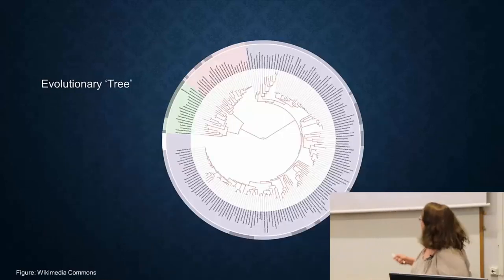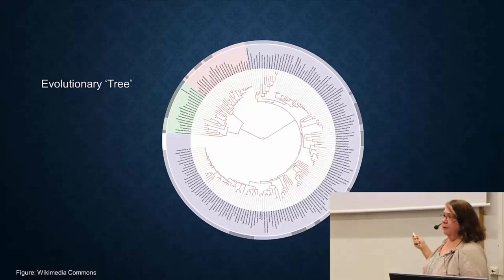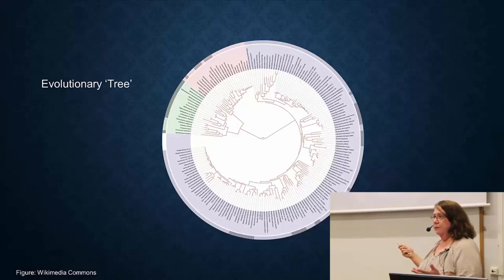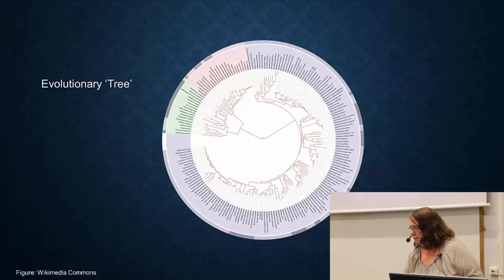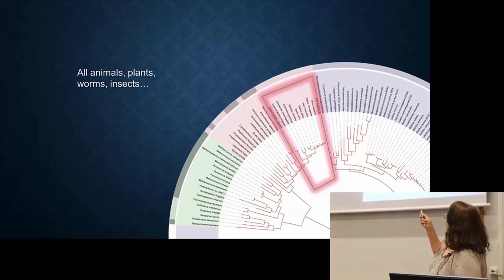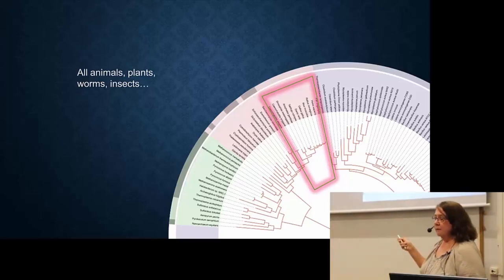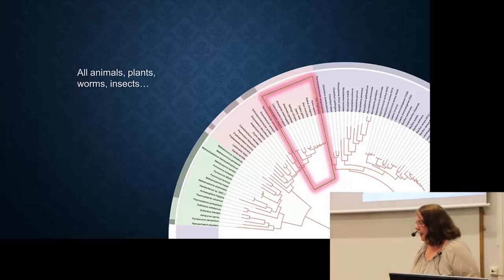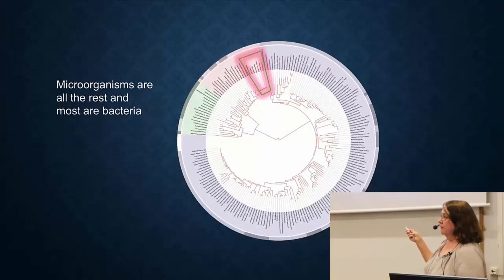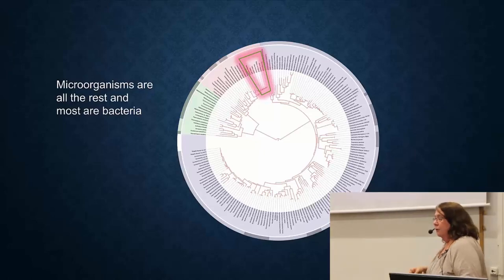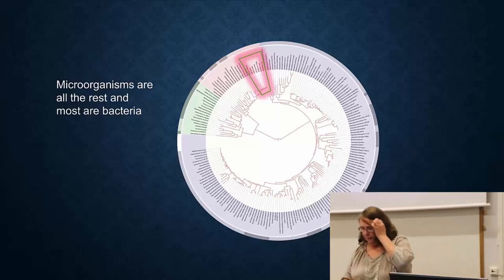Looking at an evolutionary tree of all organisms, one tiny branch includes all animals, plants, worms, and insects. Almost everything else — shown in blue — is bacteria. So when talking about microorganisms and bacteria, we're talking about enormous diversity, which is why in this course you'll hear me say 'most bacteria' rather than making absolute statements.